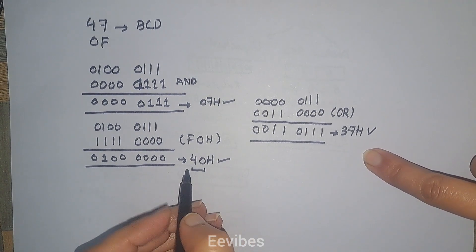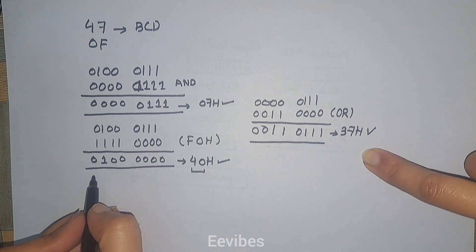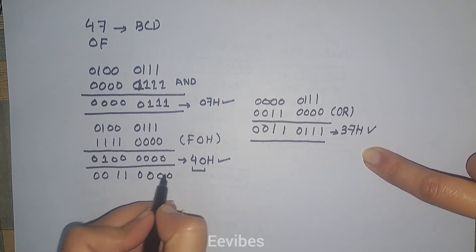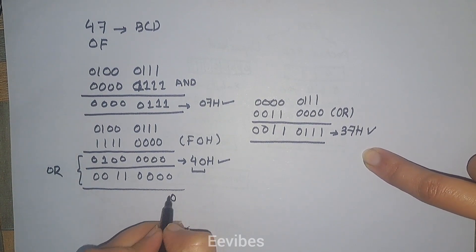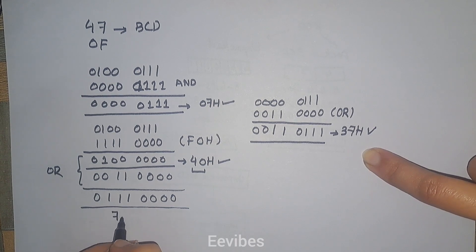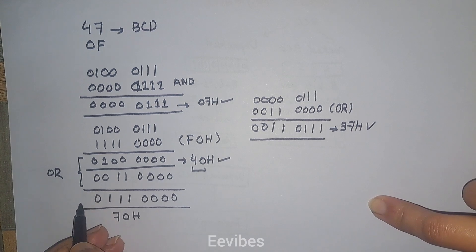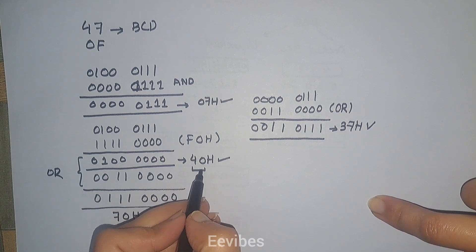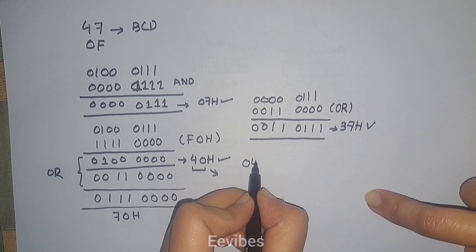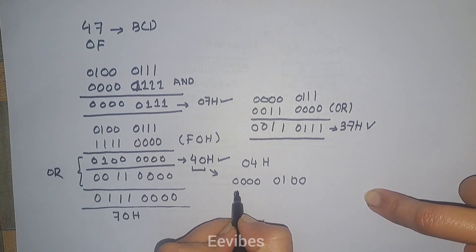Now looking at 40 hex, if I simply perform tagging with 30 hex — OR-ing 0100 0000 with 0011 0000 — the result becomes 0111 0000, which is 70 hex. But this is incorrect. The problem is that to convert the upper nibble correctly, you must first swap the number. After masking, the next step is to swap 40 hex, which converts it into 04 hex, and then perform the tagging with 30 hex.